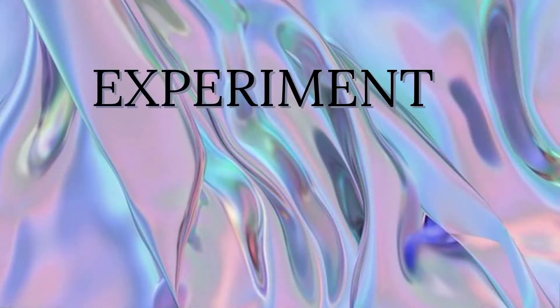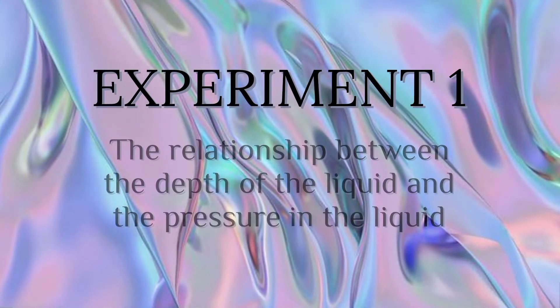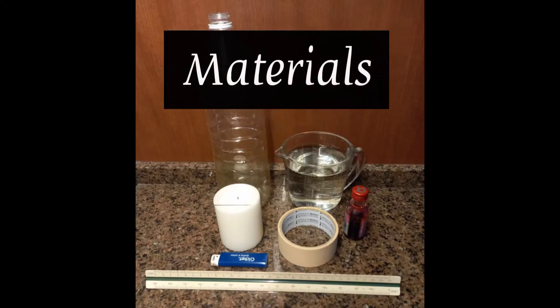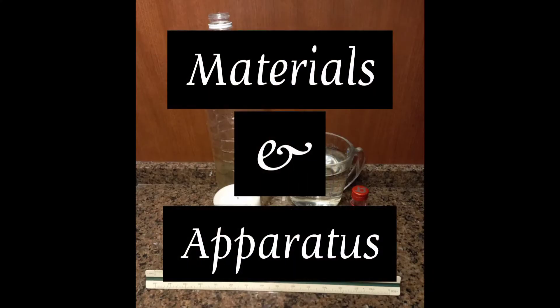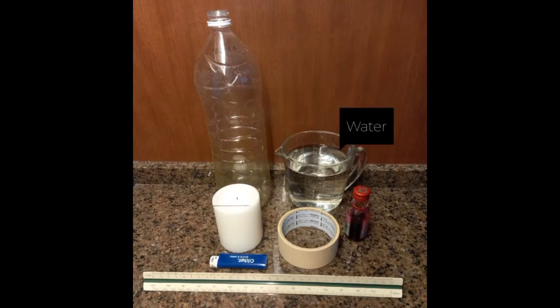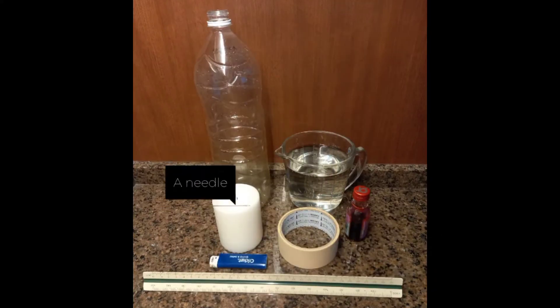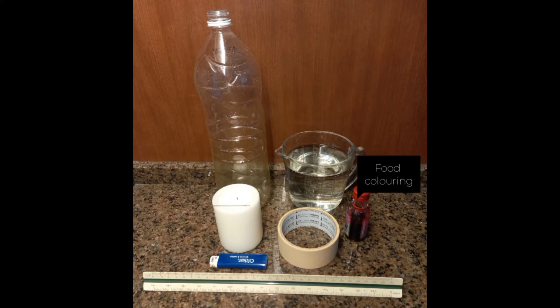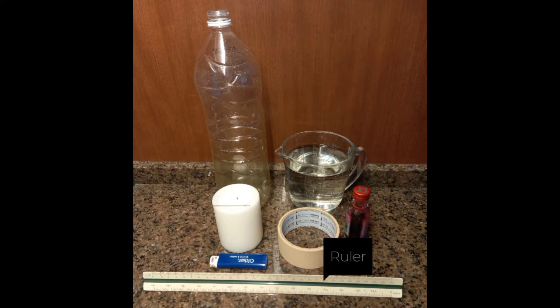The first experiment is about the relationship between the depth of the liquid and the pressure in the liquid. For that, we're going to need a plastic bottle, water, candle, a needle, food coloring, tape, lighter, and a ruler.